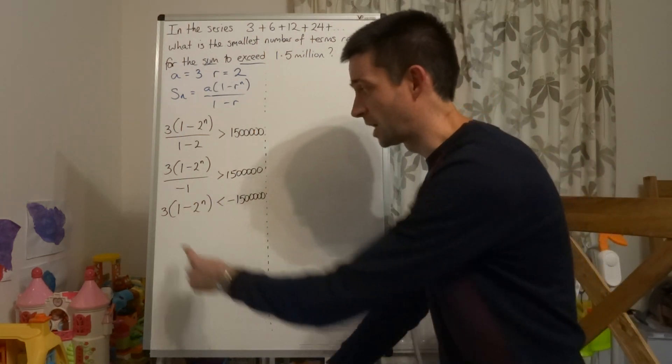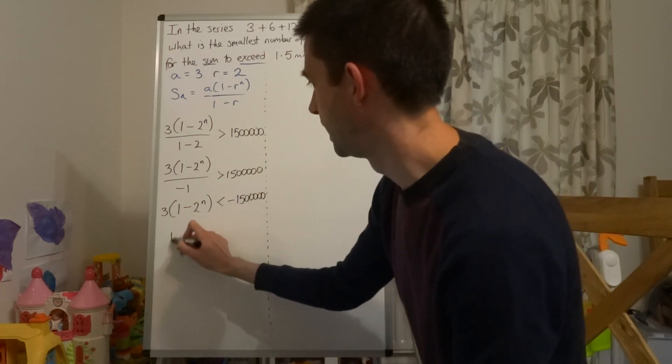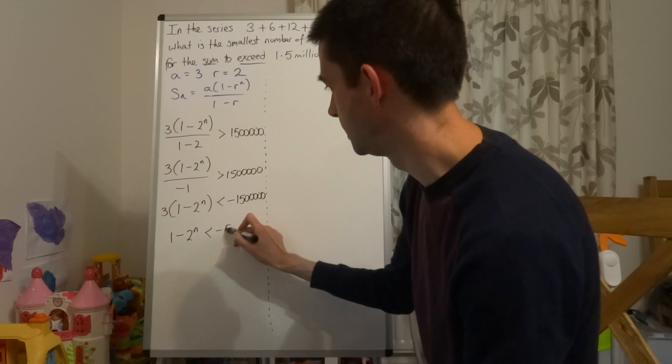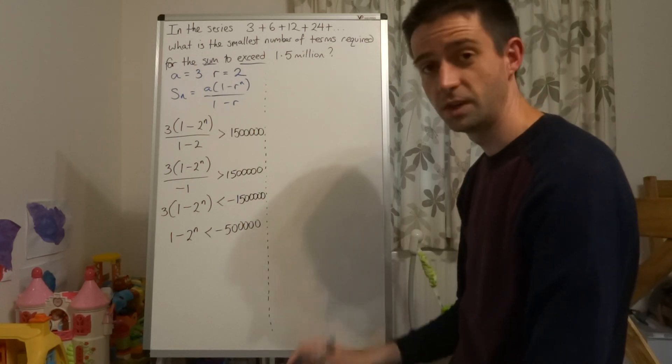So again, I said we're not going to expand those brackets out. What we're going to do is we're going to divide by 3. So we're going to have 1 minus 2 to the power of n is less than negative 500,000, dividing this by 3 as well.